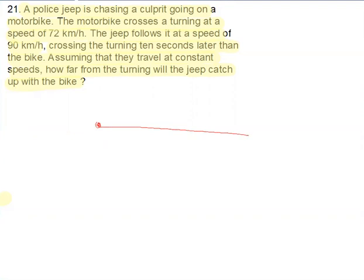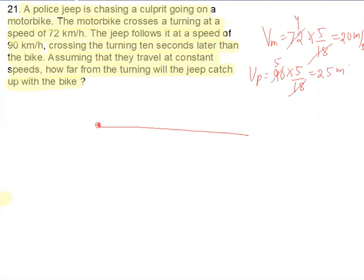Now first see what is the velocity of motorbike. Velocity of motorbike is given as 72 km per hour, so multiply 5 by 18. Then 18, this is 4, 4 into 5, 20 meter per second. Similarly, velocity of police jeep is 90 km per hour. Now convert this one into meter per second, multiply 5 by 18. So 5 into 5, 25 meter per second.